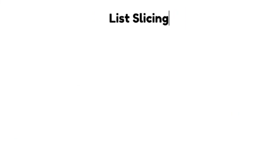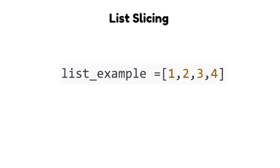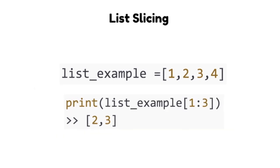We can slice a list using the index of its elements. The slice also returns a list data type. Remember, the ending index is not included in the slice.